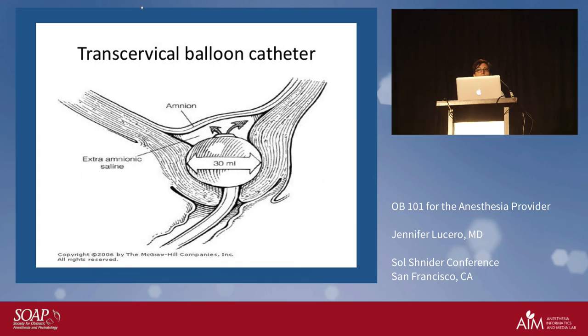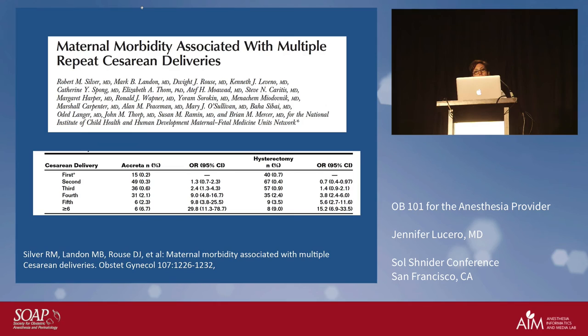The increasing rates of placental accreta with repeat cesarean deliveries follow a classic dose-response: the mean morbidity score and odds ratios increase with each additional C-section. The more C-sections a person has, the higher their accreta risk — and accreta is a quite morbid procedure.